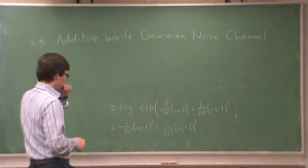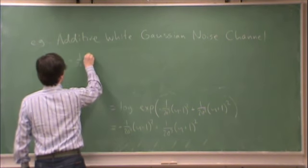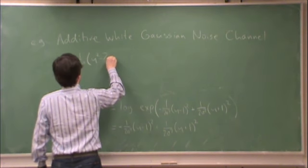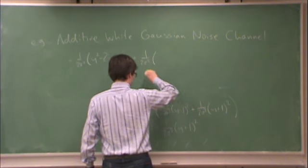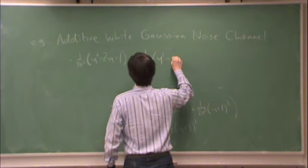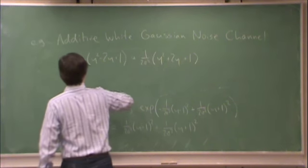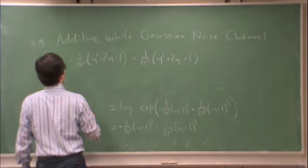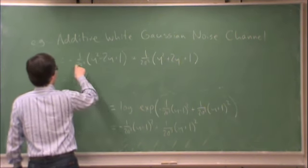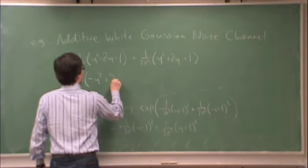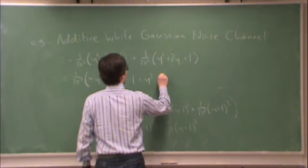Next, let's expand those quadratic terms. Negative 1 over 2 sigma squared, y squared minus 2y plus 1, plus 1 over 2 sigma squared, y squared plus 2y plus 1. And then if I multiply everything through, let's take out 1 over 2 sigma squared. y squared, then this minus goes inside, minus y squared plus 2y minus 1, and those terms are just copied, plus y squared plus 2y plus 1.